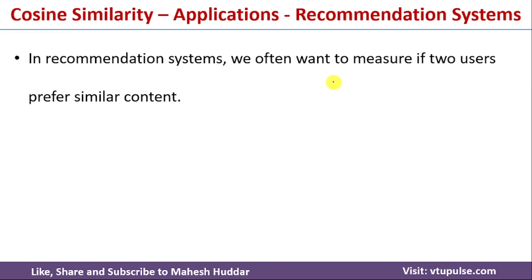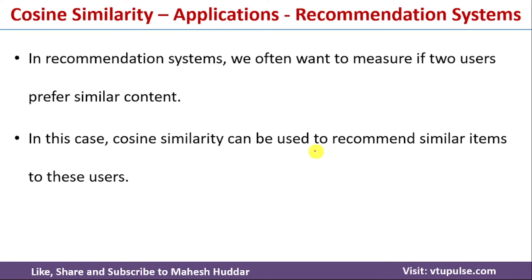Cosine similarity is also used in recommendation systems. In a recommendation system, we often want to measure if two users prefer similar content. For example, if two people prefer similar content, we can recommend the same content to the other person. We find the cosine similarity between two users' preferences, and based on that value, we can recommend similar items to those users.